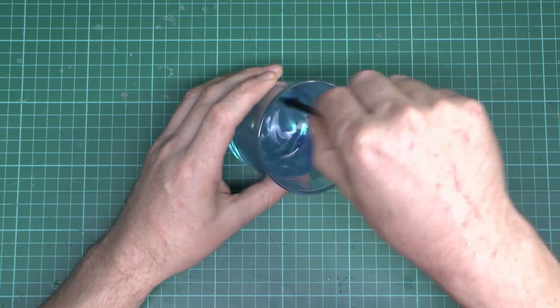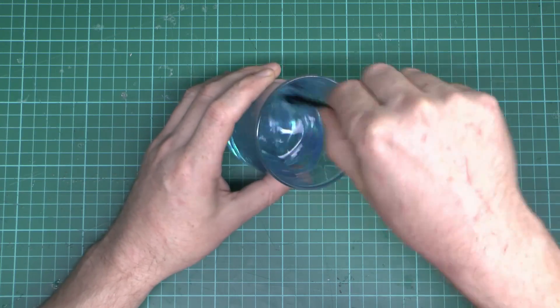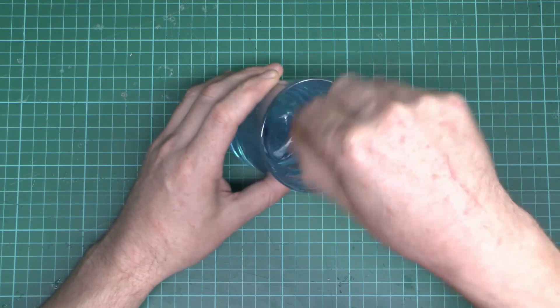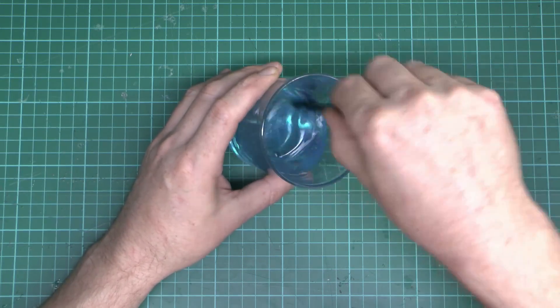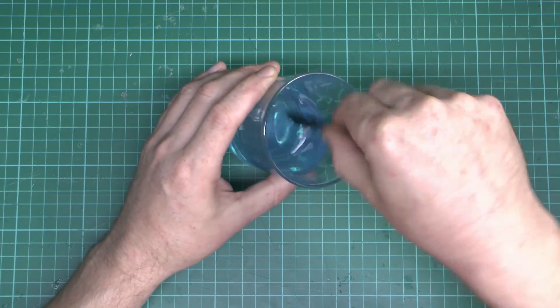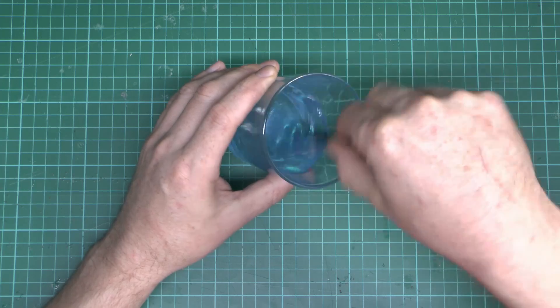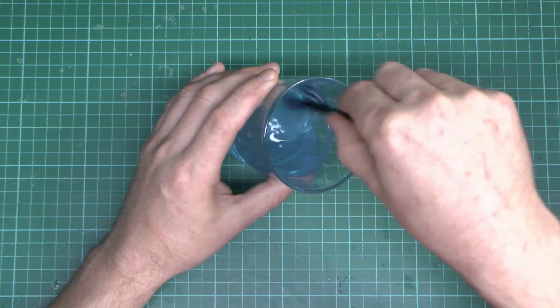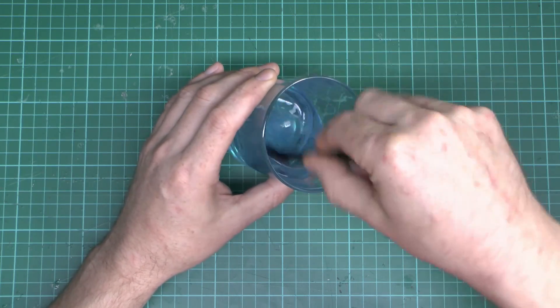And then it's just a question of mixing that together for a fairly short time. It only recommends a certain number of seconds on the actual instructions there. Just basically get the two things mixed together. And essentially what will happen to this is it will cross link together and then form the actual gel substance.